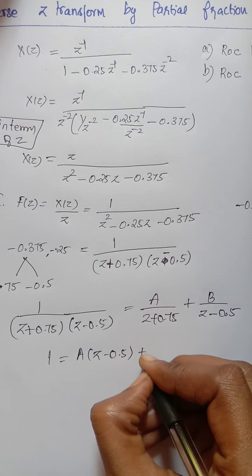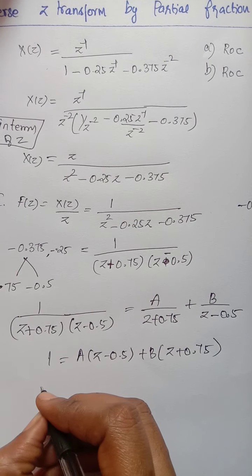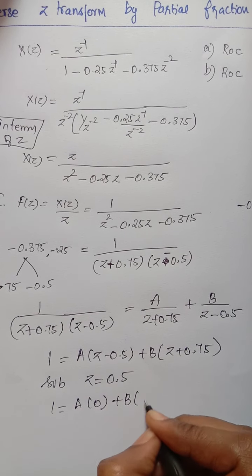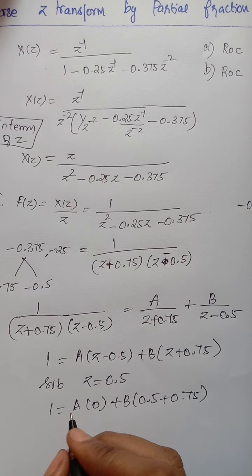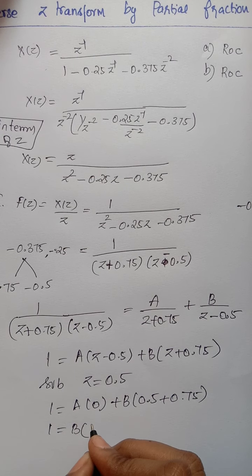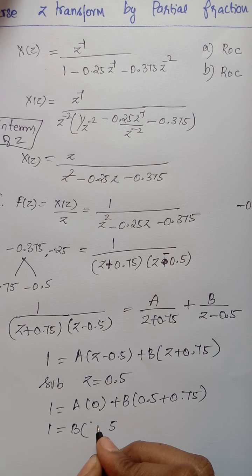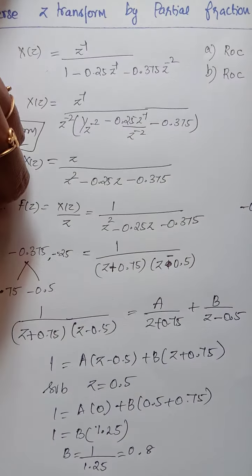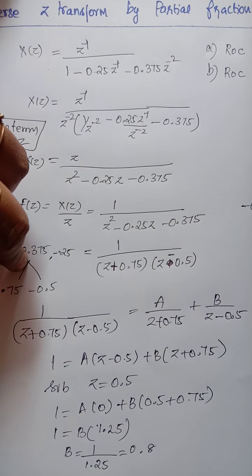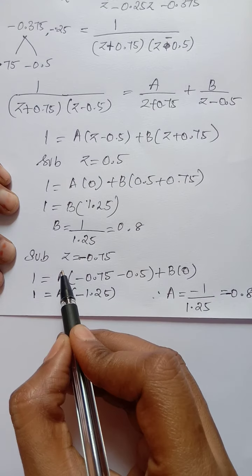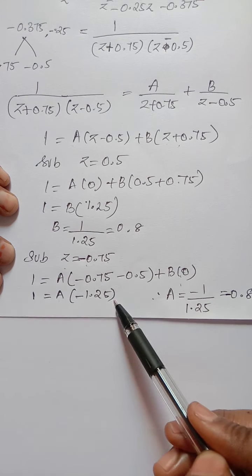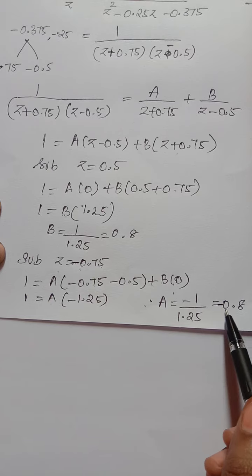Applying partial fractions: 1 equals A(z − 0.5) + B(z + 0.75). Substituting z = 0.5, we get 1 = B(1.25), so B = 0.8. Substituting z = −0.75, we get 1 = A(−1.25), so A = −0.8.